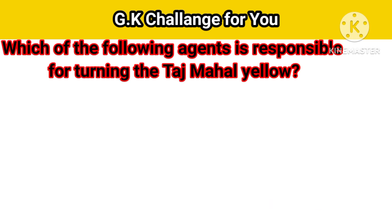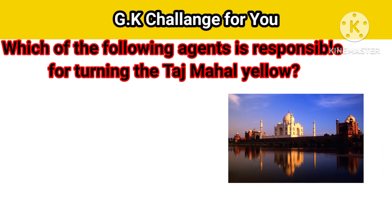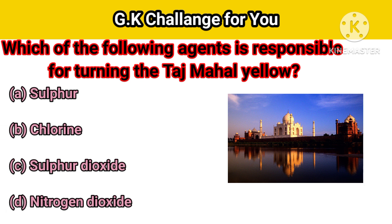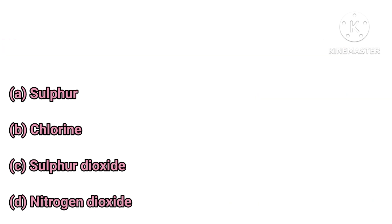Next question: Which of the following agents is responsible for turning the Taj Mahal yellow? Option A: Sulphur, B: Chlorine, C: Sulphur Dioxide, D: Nitrogen Dioxide. Your right answer is Sulphur Dioxide.